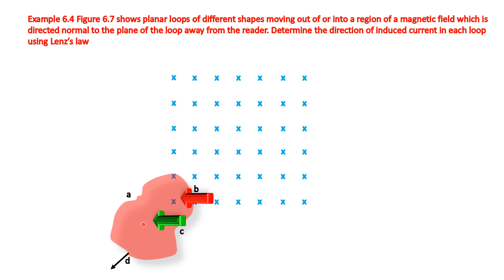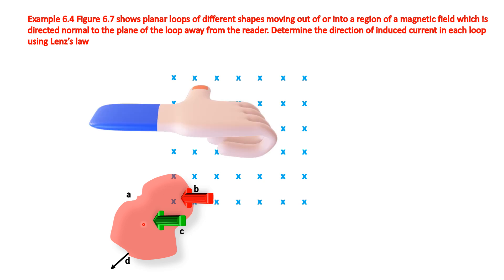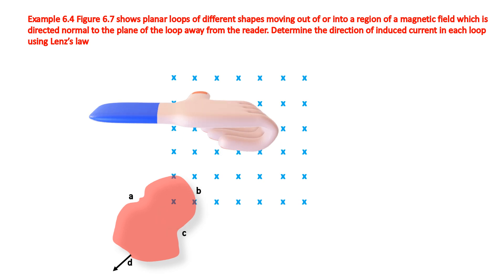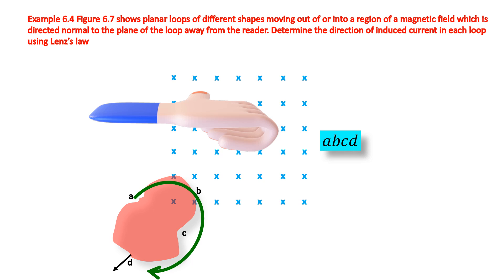Keep your right-hand thumb in the direction of the induced magnetic field and apply the right-hand thumb rule for the direction of the induced current. If the thumb shows the direction of the induced magnetic field, the other fingers show the direction of the induced current. Here the other fingers show a clockwise direction, so the induced current direction is A, B, C, D.